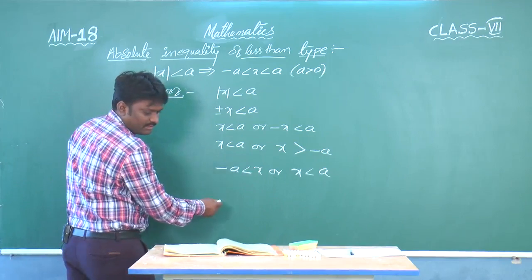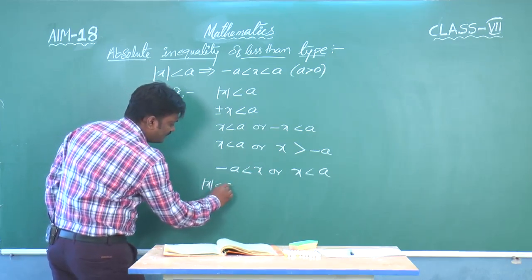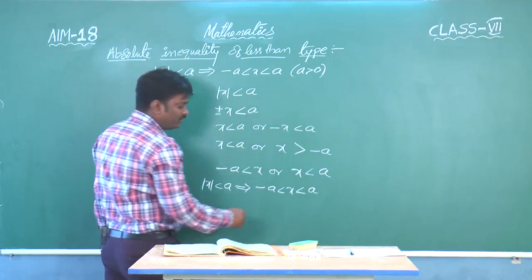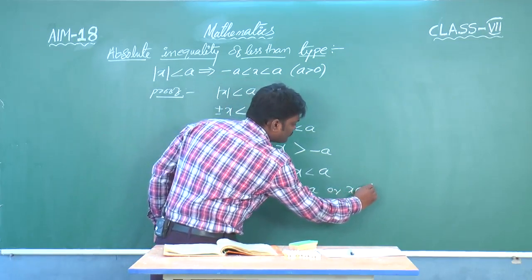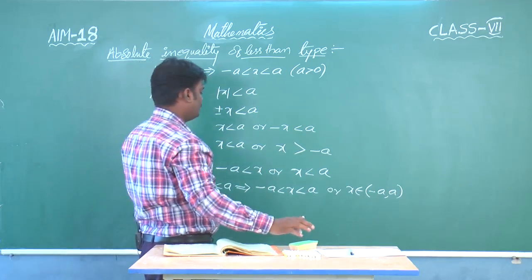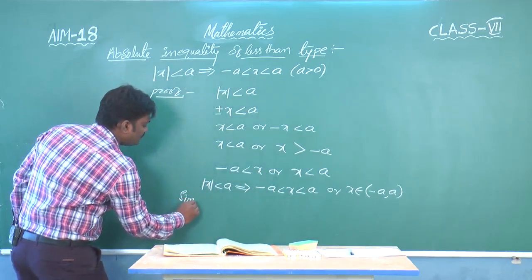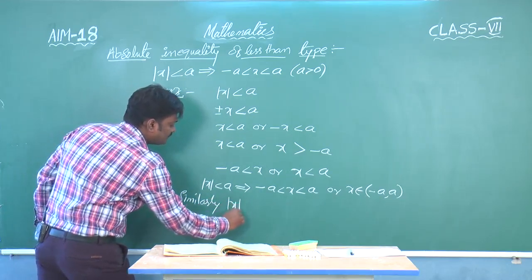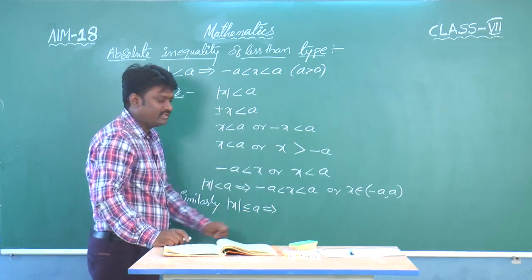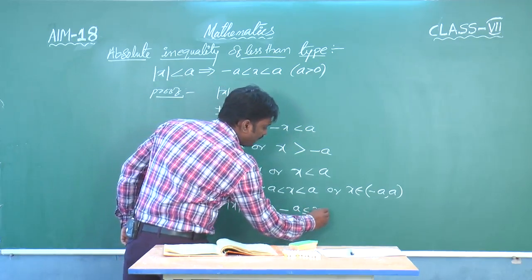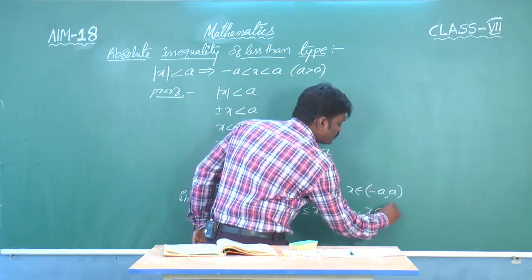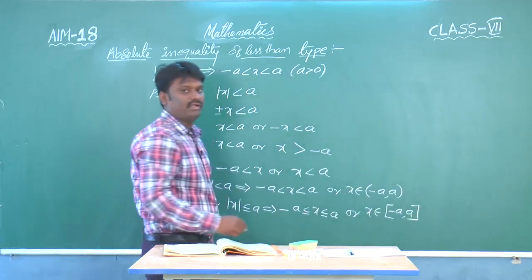So, mod x less than a gives minus a less than x less than a, or we can denote it as x belongs to the open interval minus a to plus a. Similarly, if it is mod x less than or equal to a, then minus a less than or equal to x less than or equal to a, or x belongs to the closed interval minus a to plus a.